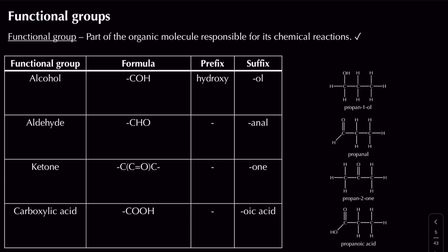Moving on to more examples — some from GCSE combined science. We have alcohols, aldehydes, ketones, and carboxylic acids. Alcohols, like ethanol, are familiar as solvents. Alcohols normally end in '-ol'. In some cases you might use a 'hydroxy' prefix, but most of the time they just end in '-ol'. Aldehydes have a carbon double-bonded to an oxygen as part of a functional group also containing a hydrogen.